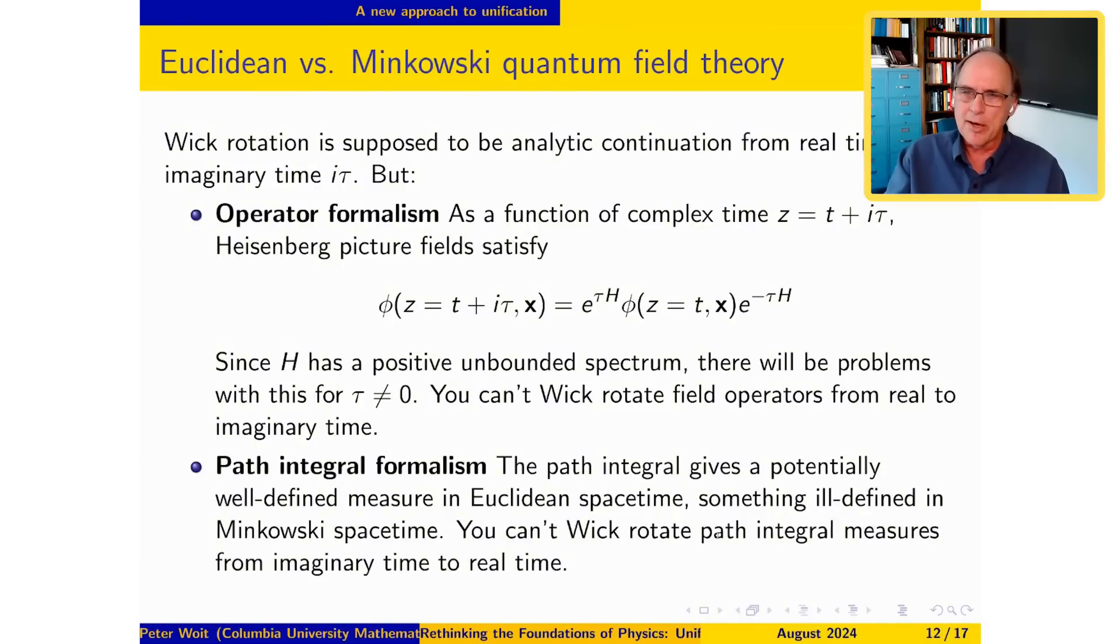If you write imaginary time, this Euclidean spacetime, then the path integrals are E to the minus something large, positive and large, and they make perfect sense. So you're integrating some kind of Gaussian thing or something that falls off at infinity very nicely. But if you try and do this in Minkowski spacetime or real time, then you find is that you're trying to integrate over some infinite dimensional space E to the i times something. So you're integrating this wildly varying phase over an infinite dimensional space. And this, you know, you can't, it actually just doesn't make sense in any sense as a measure or as a real integral.